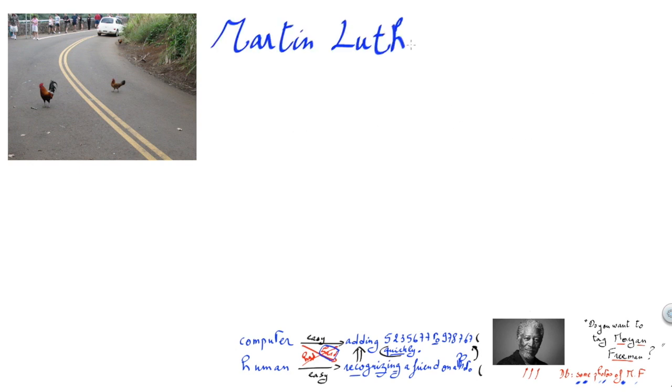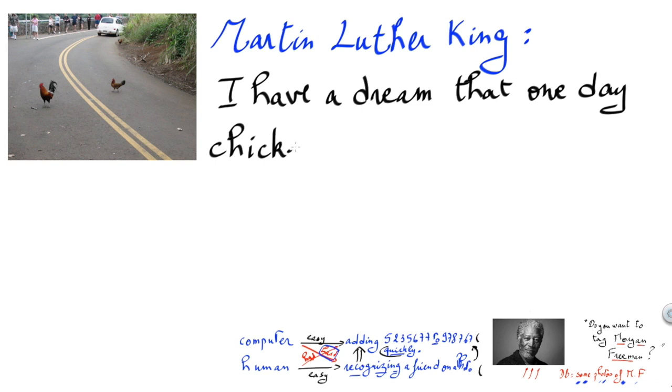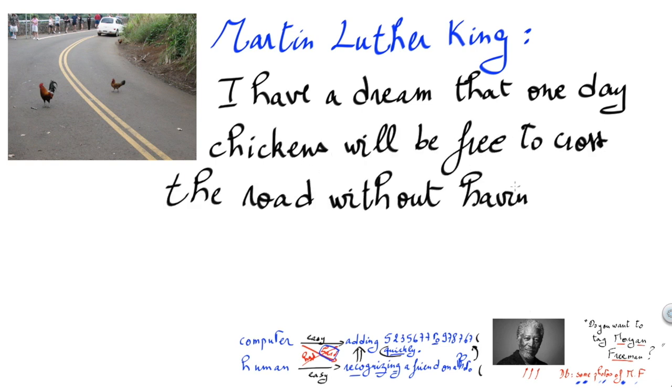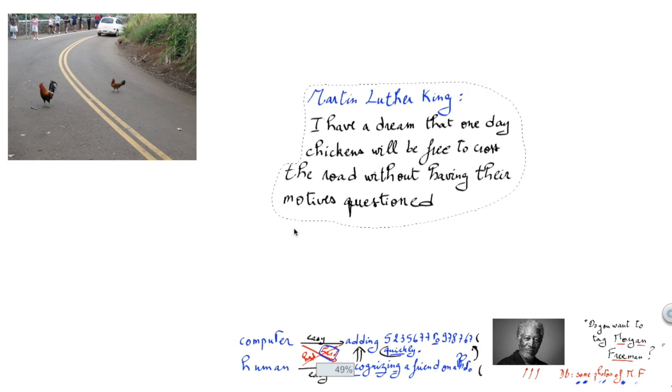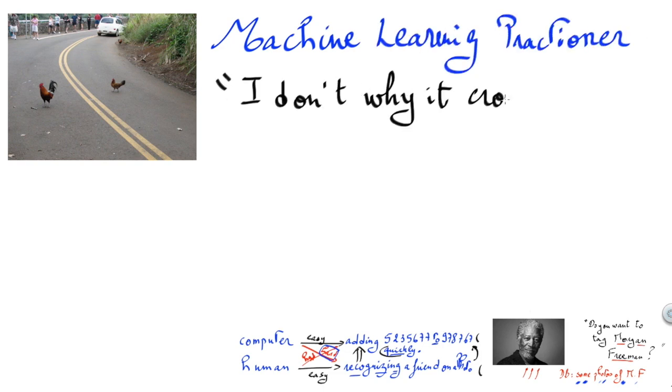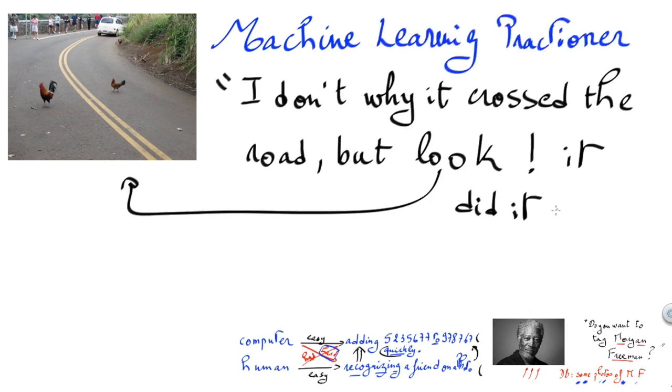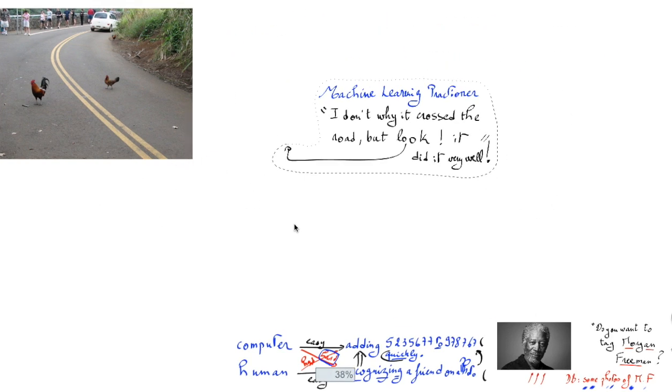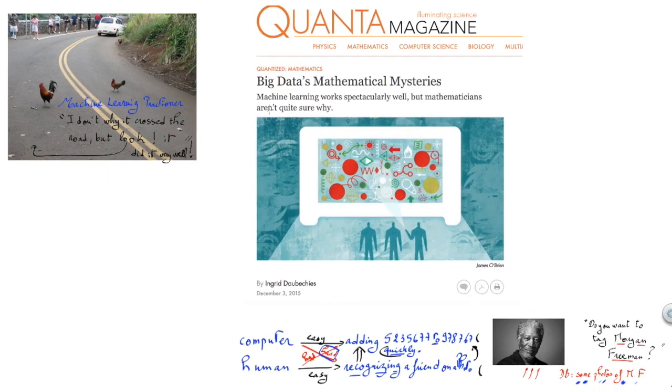Martin Luther King would reply: I have a dream that one day chickens will be free to cross the road without having their motives questioned. Then there is the preconceived idea on the machine learning practitioner who would tell you: I don't know why the chicken crossed the road, but look, it did it very well. There is an idea here that machine learning works very well but we don't really know why.